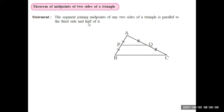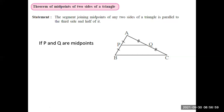Then we see the midpoint theorem — the theorem of the midpoint of two sides of a triangle. It states that if two sides of a triangle have midpoints, the line joining these two midpoints will be parallel to the third side and equal to half of the third side. So if P and Q are the midpoints, then PQ will be parallel to BC and PQ will be half of BC.